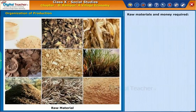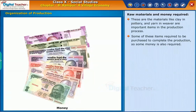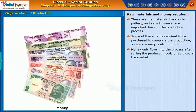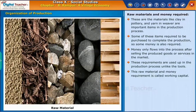Raw materials and money are also required. These are materials like clay in pottery and yarn for a weaver — important items in the production process. Some of these items need to be purchased to complete production, so some money is also required. Money flows into the process after selling the produced goods or services in the market. Unlike tools, these requirements are used up in the production process. This raw material and money requirement is called working capital.